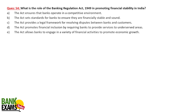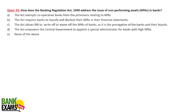The role of the Banking Regulation Act 1949 in promoting financial stability: the act sets standards for banks to ensure they are financially stable and sound. Regarding how the Banking Regulation Act addresses the issue of NPAs — the act requires banks to classify and disclose NPAs, maintain proper provisions, distinguishing between doubtful assets, failed assets, lost assets, and specifying how much provision is required.